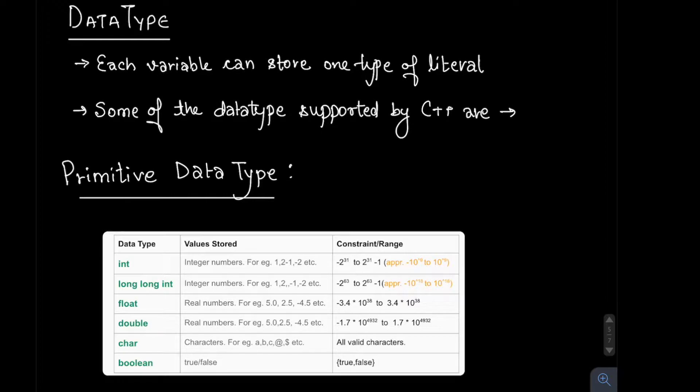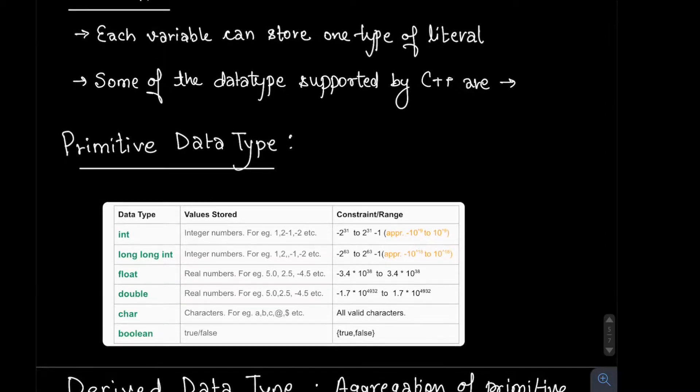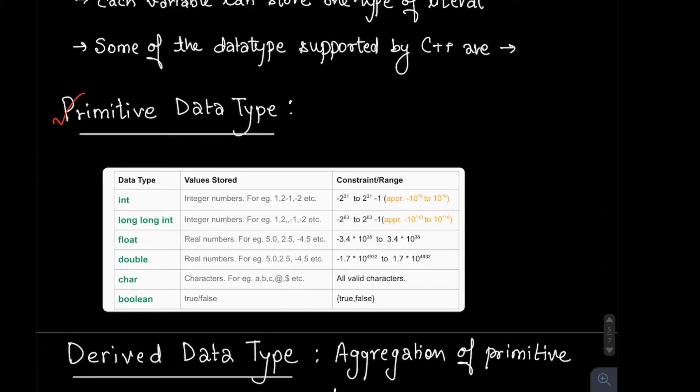When defining a variable, we have to define the data type for that variable as well. Some of the data types supported in C++ are—we basically have two types: one is primitive and the other is derived.